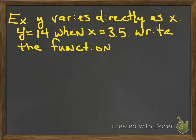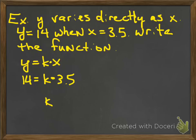Okay, so here we have an example. Y varies directly as x when y is equal to 14, or when y is equal to 14, x is equal to 3.5. Write the function. So what we have to do here is we're going to find the function. To do that, we first have to find the k. So let's first off, because it says varies directly, we're going to say y equals k times x. Plug the numbers in where they belong: 14 in place of the y, 3.5 in place of the x.